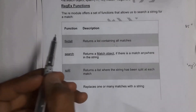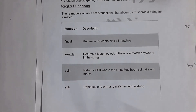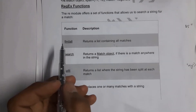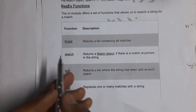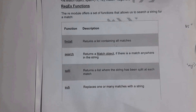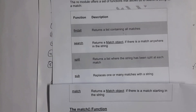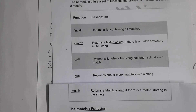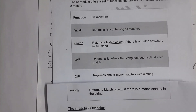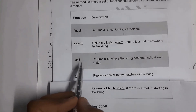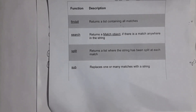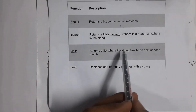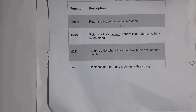To summarize the definitions: findall returns a list containing all matches — even if a string is available twice it will display all occurrences. The search function returns a match object if there is a match anywhere in the string. The match function returns a match object only if there is a match at the starting of the string. The split function returns a list where the string has been split at each match. The sub function is used to substitute — replace — any string.